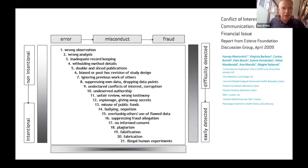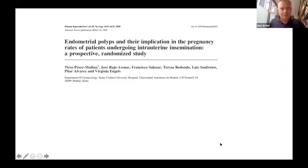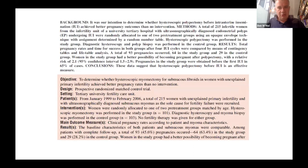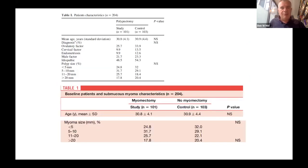To set the scene: this is an overview of all things that can go wrong in clinical research, going from unintended error on the upper left to illegal human experiments on the lower right. In this session we're really addressing the most serious issues: falsification and fabrication. I'll talk about my own story with fraud, how to detect it, and the consequences and how to deal with it. My story starts in the field of obstetrics gynaecology with a study on myoma removal and a study on polyps.